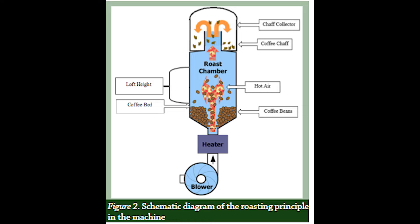The hot air in a fluid bed roaster ensures that the coffee beans are roasted evenly, resulting in a more consistent flavour and aroma in the final product. A fluid bed roaster is well suited for small batch roasting, which allows for greater control over the roasting process and the ability to experiment with different roast profiles. Because the beans are suspended in hot air during the roasting process, the risk of smoke or ash contamination is minimised.